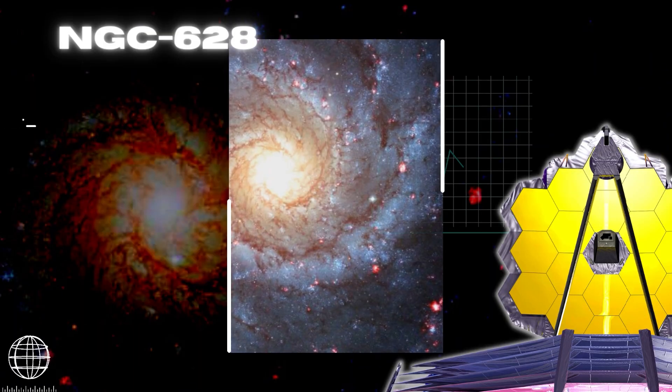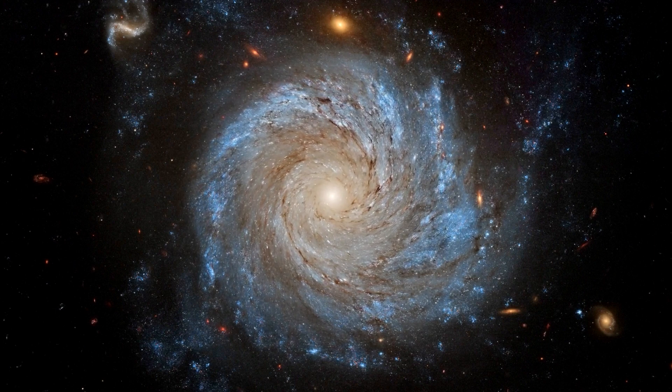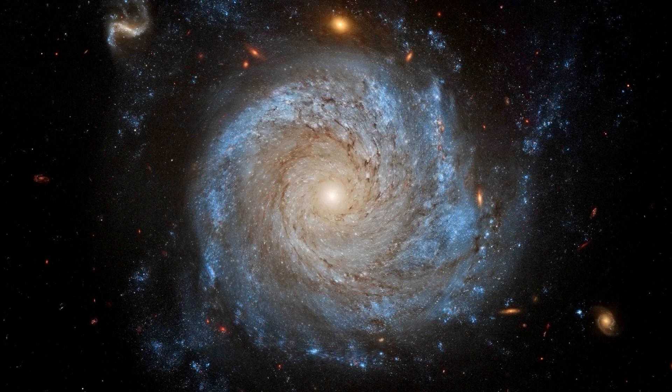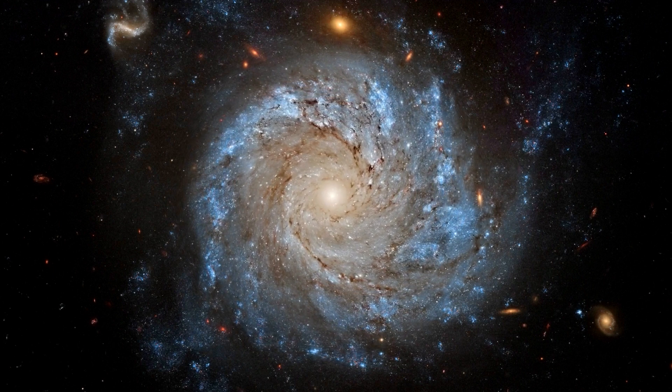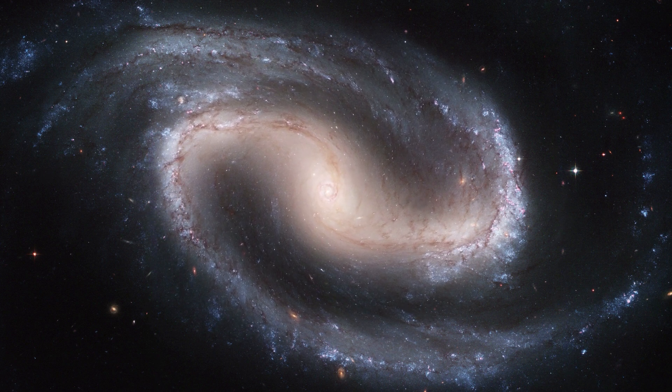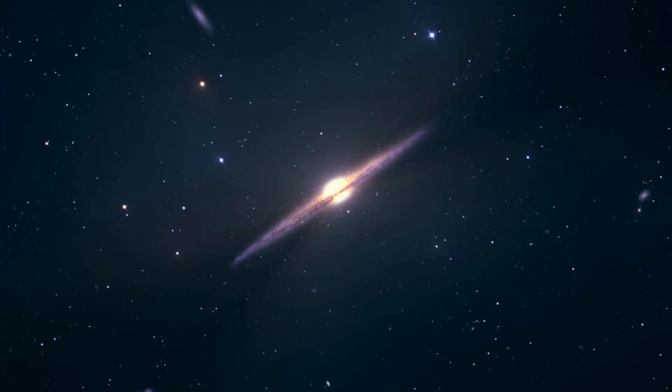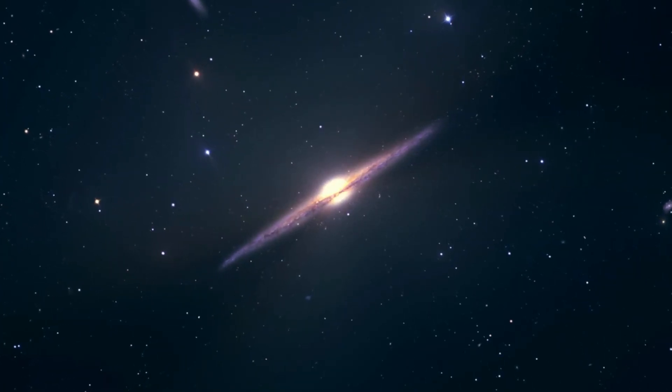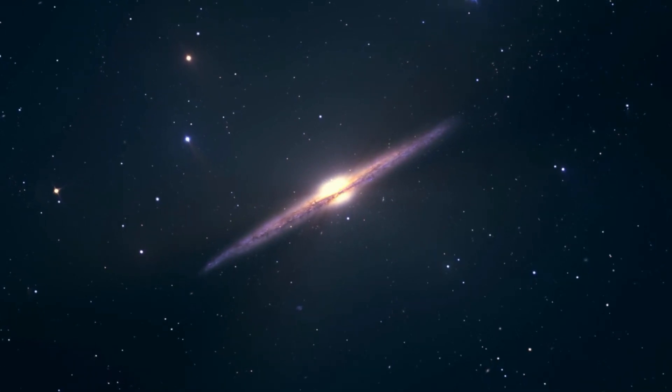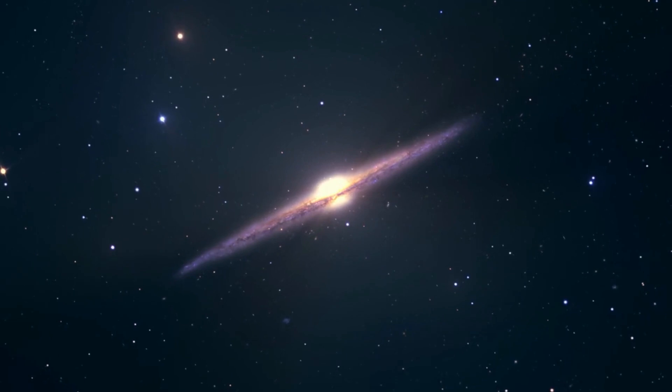NGC 628: On July 17th, Webb's MIRI and NIRCam equipment captured the most thorough photos ever. The platonic ideal of a spiral galaxy is NGC 628, better known as Messier 74. It is a massive spiral galaxy in the Pisces constellation, approximately 32 million light-years away from Earth. Because the galaxy has two well-defined spiral arms, it is cited as an iconic example of a grand design spiral galaxy.